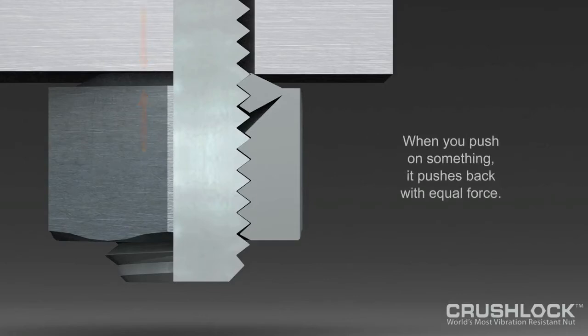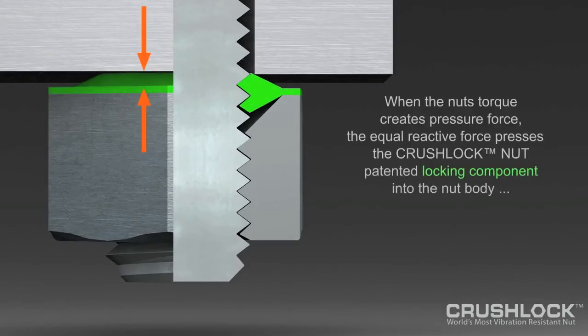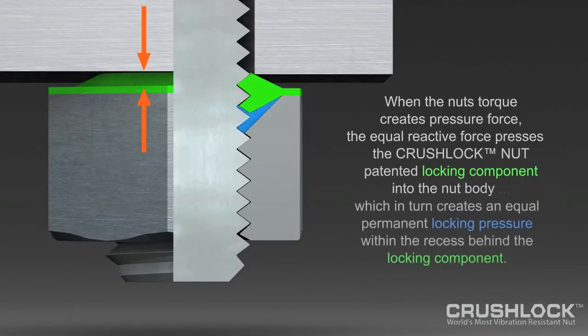It's able to accomplish this feat by using our innovative patented flying saucer technology. The spiral seating action of the flying saucer being pressed into the nut body prevents the first two threads from stripping and allows greater applied torque and pressure. The increased torque and pressure greatly increases bolted joint strength.